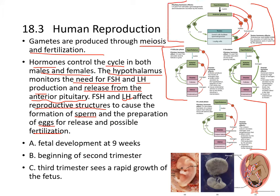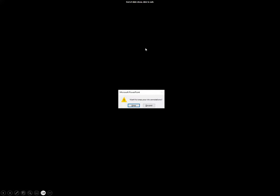At nine weeks you can see the embryo developing — this is the beginning of the second trimester. The third trimester sees rapid growth of the fetus in preparation for birth. That's all I have for today.